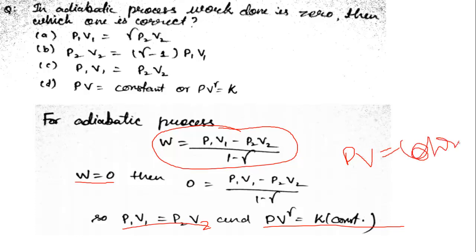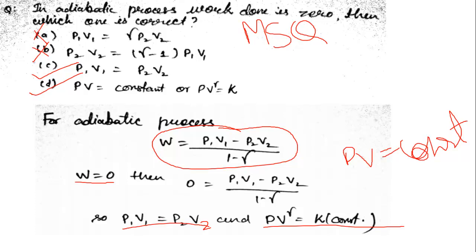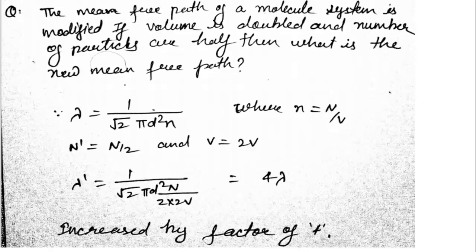According to the options, this was an MSQ (multiple select type) question, meaning more than one option can be correct. Based on my analysis, two options seem correct — the gamma-W option would be wrong since gamma merges to zero there. So options like C or D would be picked. Also, after the exam, check where you made mistakes — self-analysis will tell you your standing, your expected marks, and whether you qualify for IIT.